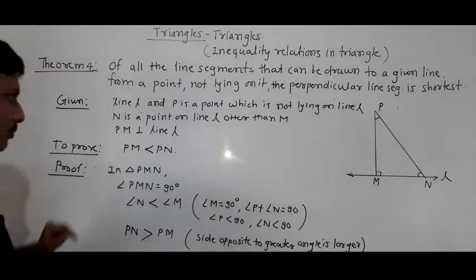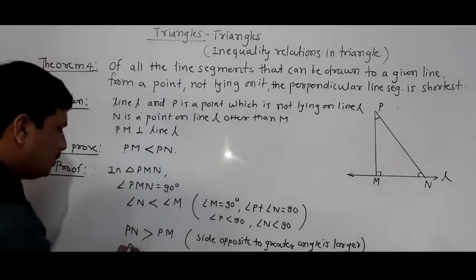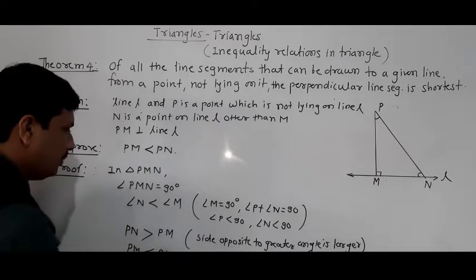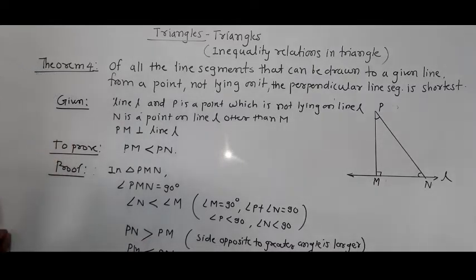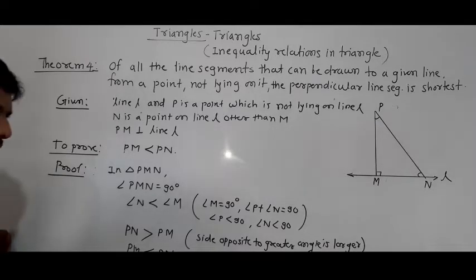So on this basis, PM is shorter than PN. You can write PM is shorter than PN — and that is the same result. This is the full theorem on inequality relations in triangles. After this, we will see some examples.